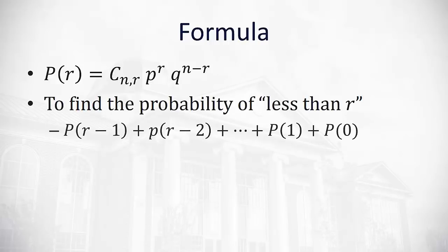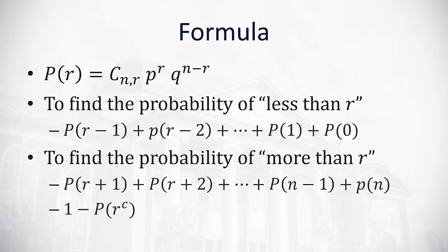Sometimes we're asked to find the probability of having less than 5 successes. If I want less than 5 successes, we add the individual probabilities together: the probability of 4 plus the probability of 3 plus the probability of 2 plus the probability of 1 plus the probability of 0, going all the way down. If we want to find the probability of more than a certain number, we add all the numbers above together — for example, probability of 6 plus 7 plus 8, all the way up to the top. With more than, it's usually easier to calculate 1 minus the probability of the complement.